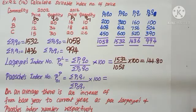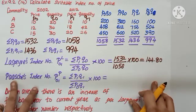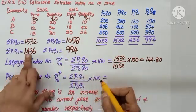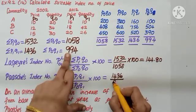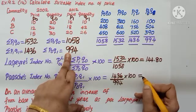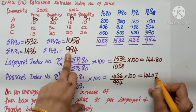Paasche's index number, let us substitute P1Q1, it is 1436, P0Q1, 994. Multiply, divide and write the answer. It is 144.47.